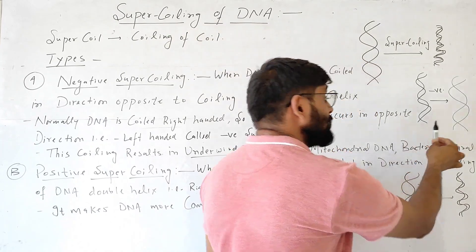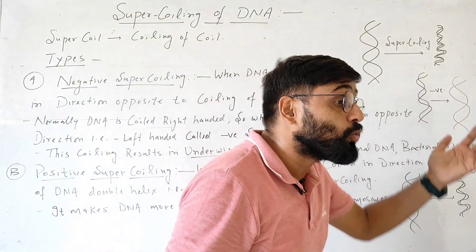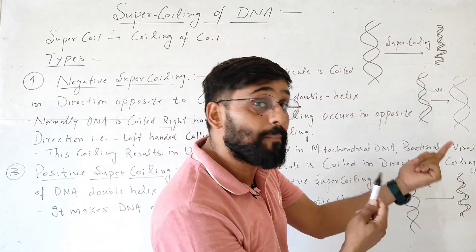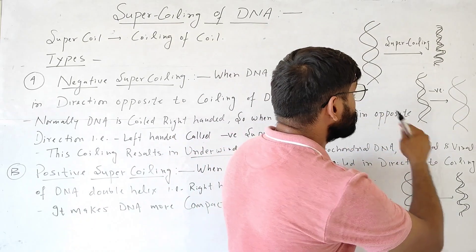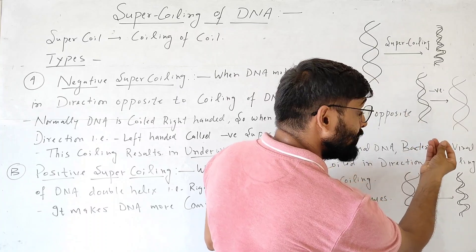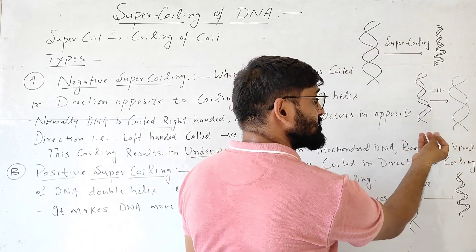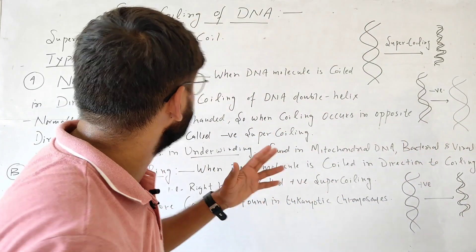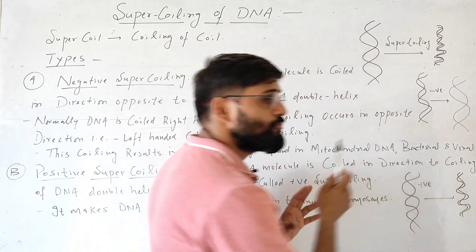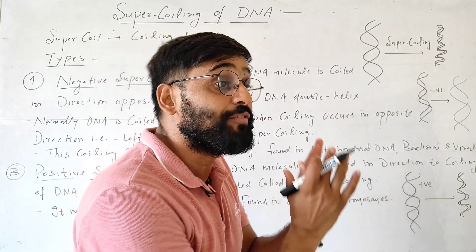You can see that if it coils in the direction opposite to the original coiling, it will make DNA less compact. It will cause underbinding and it will be in a relaxed state. Suppose we have two ropes coiled together in one direction — they become compact. But when we rotate these two ropes in the direction opposite to that coiling, it will cause underbinding. This is called negative supercoiling, and this type of coiling is found in mitochondrial DNA, bacterial DNA, and viral DNA.